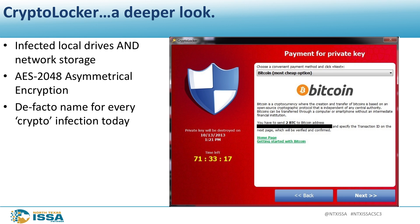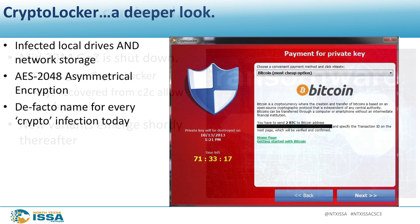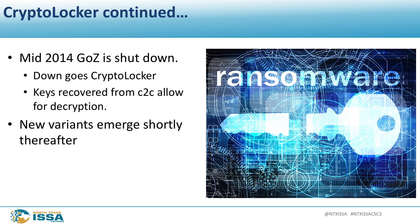CryptoLocker was one of the first variants that didn't just go after local files — it infected network shares in addition to local shares. It used AES 2048 asymmetric encryption, whereas prior variants used symmetric encryption — basically having the same password on both sides instead of a private and public key. CryptoLocker became like Kleenex and Xerox — the de facto name for ransomware. At the end of 2014, law enforcement compromised the GameOver Zeus botnet and shut it down, recovering the private keys from command and control servers to decrypt compromised systems.